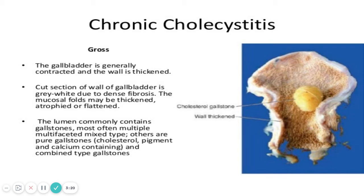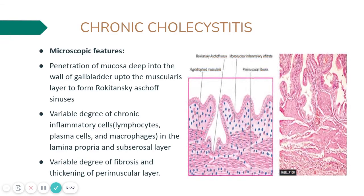Regarding the lumen, it commonly contains gallstones, mostly multiple. The two main types of gallstones are cholesterol stones and pigment stones, and the most common are cholesterol stones. Here you can see a cholesterol stone in the center of the specimen.